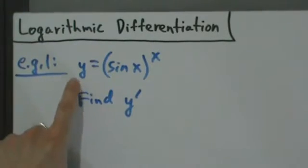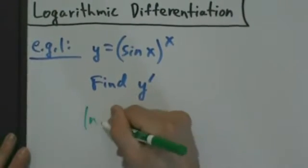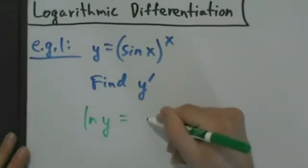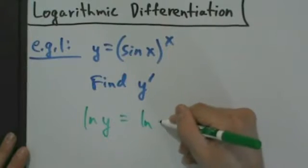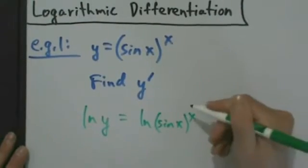Natural log of y equals natural log of sine of x to the x. We're taking the natural log of all that, so these square brackets aren't really necessary technically speaking, but it's not a bad idea to have those.